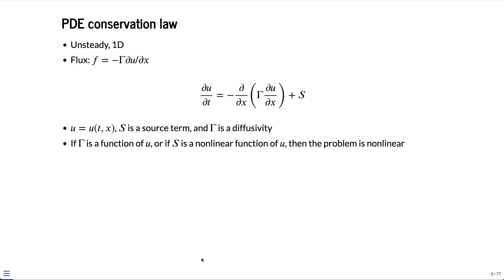For example, the PDE that we might be interested in is the conservation law for a scalar U. U is a function of time and position, and is given by this equation where we have the divergence of a scalar flux, where the flux is given by minus diffusivity gamma times the gradient of the scalar plus a source term.